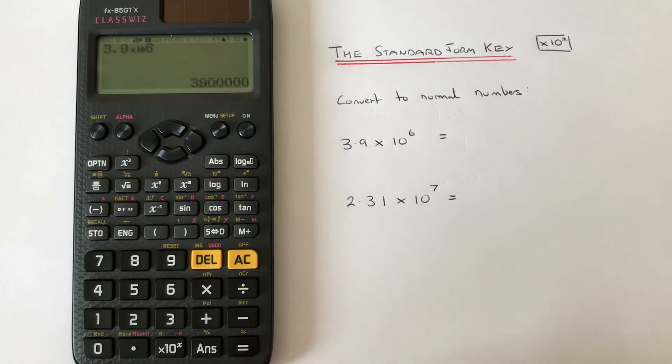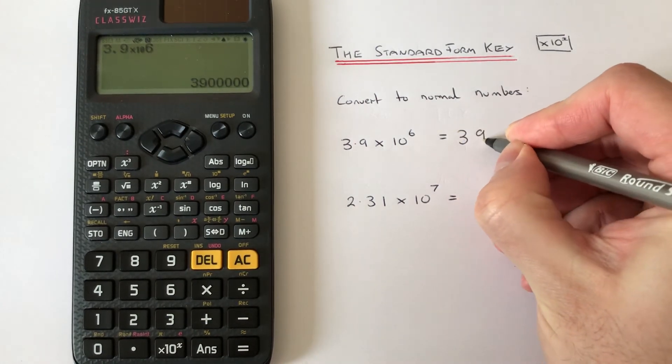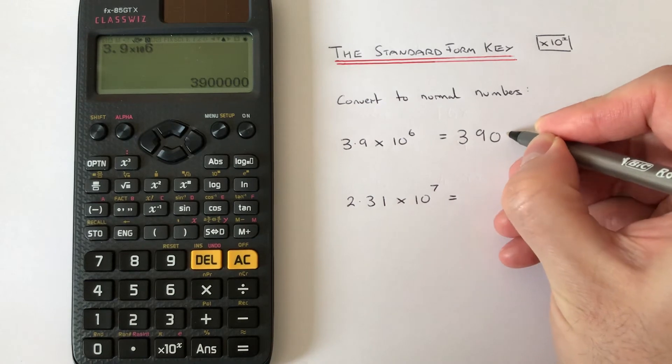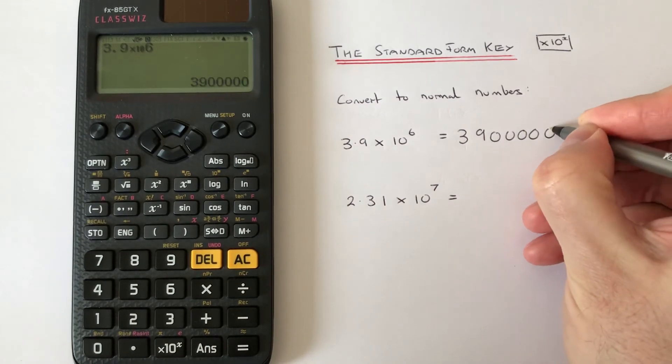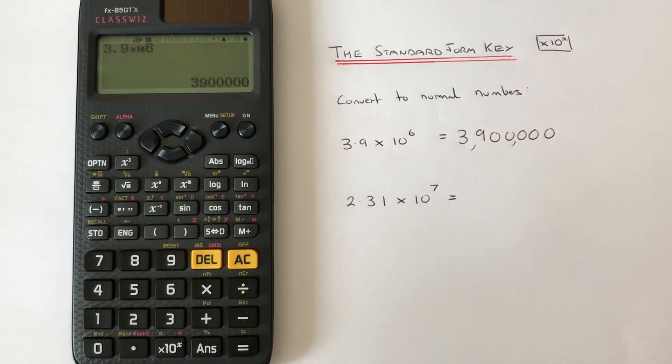Press the equals key, and we get 3,900,000 - three million nine hundred thousand. Let's look at the second example. This one we've got 2.31 times 10 to the power of 7.